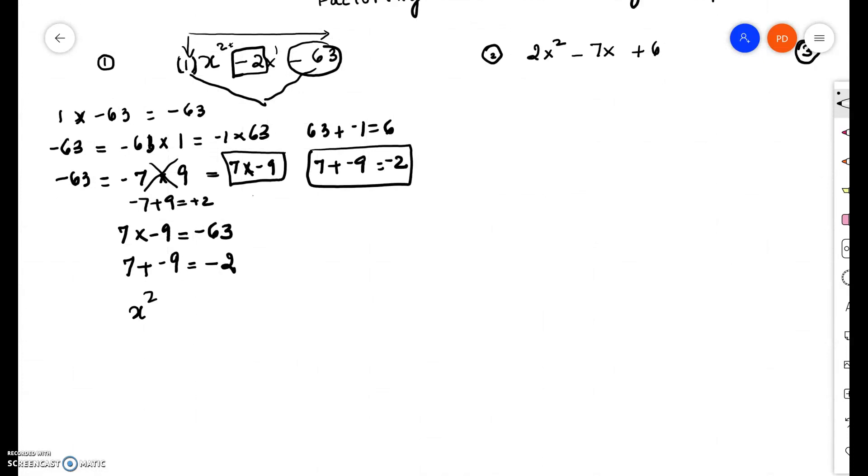x squared, we leave that alone. Negative 63, the last term, we leave that alone. But the middle term, we are going to split it using 7 and 9.